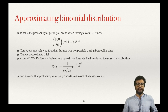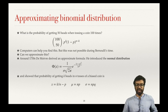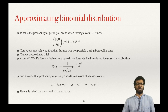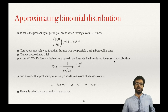What De Moivre showed is that the probability of getting k heads in n tosses of a biased coin can be approximately obtained. You substitute x as k over n minus p, mu — the mean — as np, and sigma — the standard deviation — where sigma squared is the variance, as the square root of np times (1 minus p). Even if it is an approximate value, it is very close to the real value.